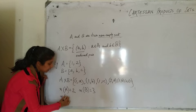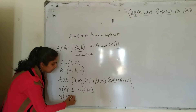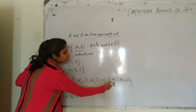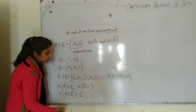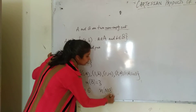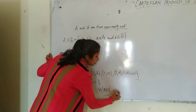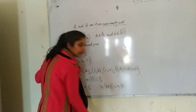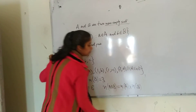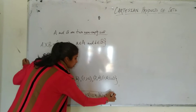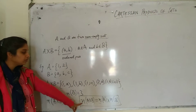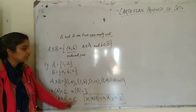The number of elements in the Cartesian product A cross B is 1, 2, 3, 4, 5, 6 — that is 6. So the number of elements in A cross B equals the number of elements in A multiplied by the number of elements in B. This is a direct formula we will use for finding the number of elements in a Cartesian product.